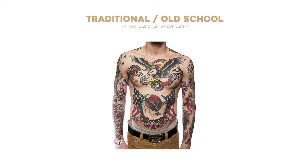The old-school tattoo style became popular in the beginning of the 20th century. As it was a wartime, the themes would often be patriotic without leaving out the sailor origins. The main characteristics of the old-school tattoo are the use of straight thick lines and basic colors — blacks, whites, blue, and red — with simple themes. Tattoos had to be done quickly so that another client could come in, and they also had to be able to withstand sunlight and hard work.